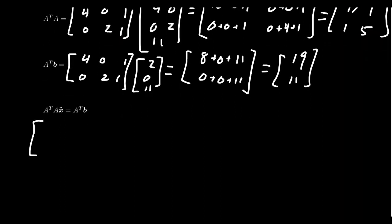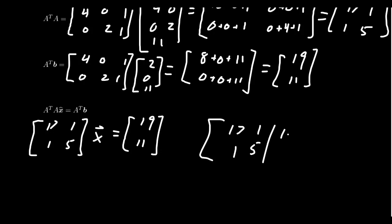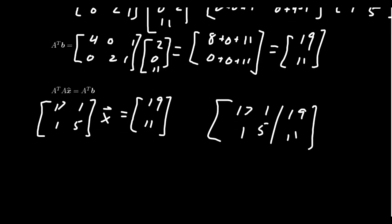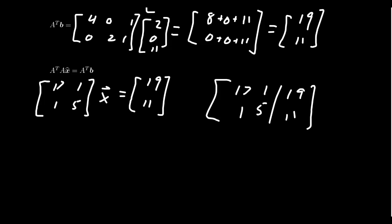So if we write this down, we have 17, 1, 1, 5 times it by x. This should equal 19, 11. And you can solve this in a lot of different ways, like you've solved so many systems of equations. You could try Gauss elimination, Gauss-Jordan elimination. You can augment the matrix and row reduce it. That is an acceptable way. In this situation, A transpose A is actually an invertible matrix. So we could actually compute the inverse of A transpose A. It is just a 2 by 2 matrix, after all. It's not so bad.